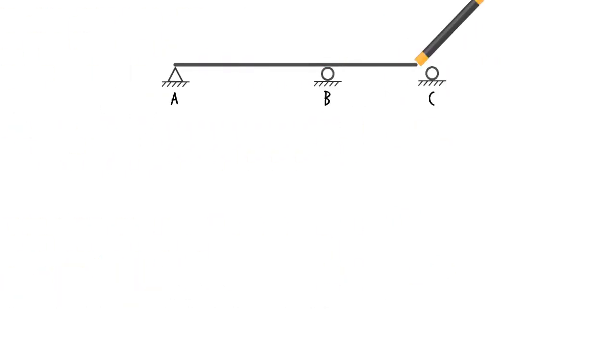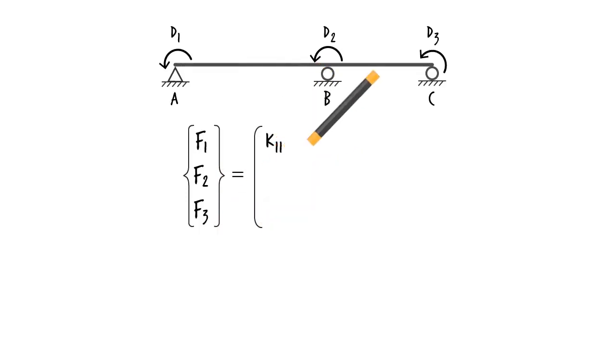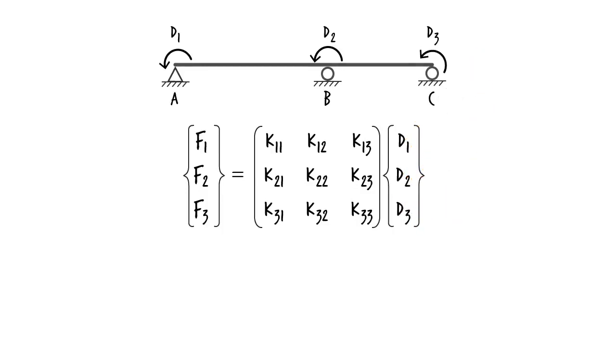The beam has three degrees of freedom, which are rotations at A, B, and C. Let's label them as D1, D2, and D3. These are the unknowns we wish to determine. Since there are three unknown displacements, we need to formulate and solve three equations. In matrix form, the equations are written as...